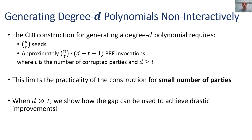Using the CDI construction for generating a degree-D polynomial requires storage of n-choose-T seeds and approximately n-choose-T times (D minus T plus 1) PRF invocations, where T is the corruption threshold and D is at least T. This limits practicality to only small numbers of parties. We show that if D is strictly larger than T, we can use this gap to achieve drastic improvements for both storage and PRF invocations.